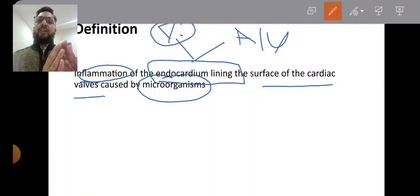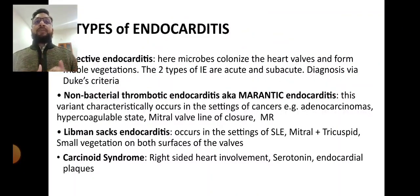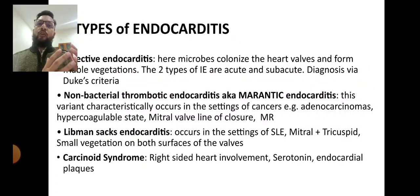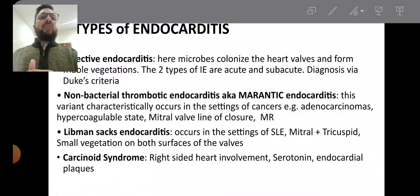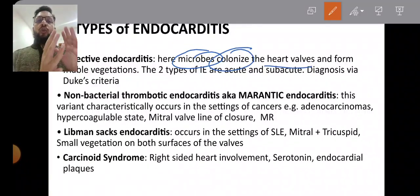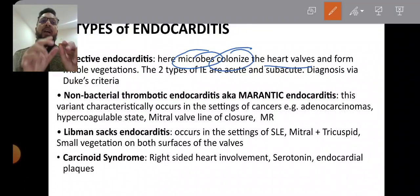There are different types of endocarditis: infective endocarditis, non-bacterial thrombotic endocarditis, Libman-Sack endocarditis, and carcinoid syndrome-related endocarditis. In infective endocarditis, microbes colonize the heart valves. When the valve is damaged or the patient has a prosthetic heart valve, clots of fibrin and platelets form, and microbes then colonize on top of these, leading to infection.